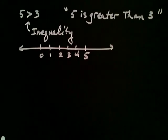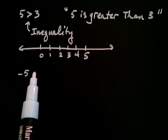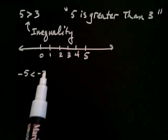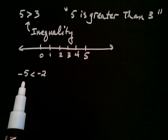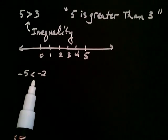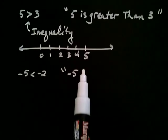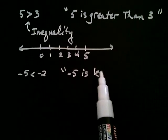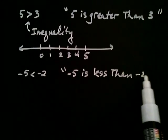Likewise, if somebody writes negative five is less than negative two, notice how the arrow points to the left. And again, we read from left to right: negative five is less than negative two.